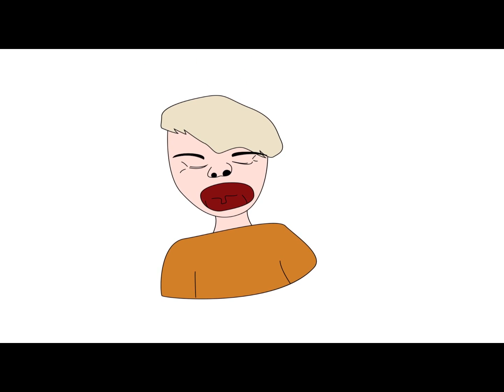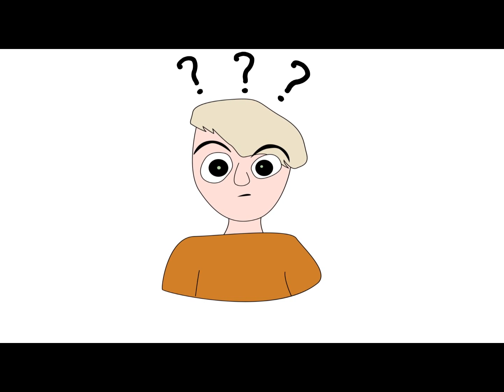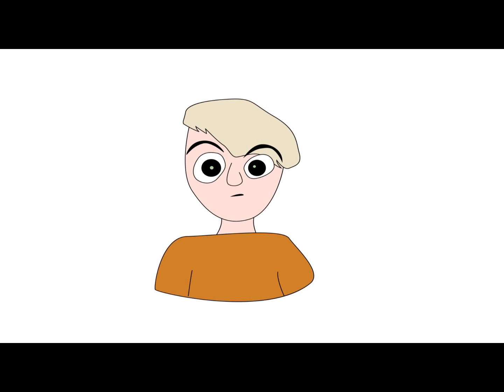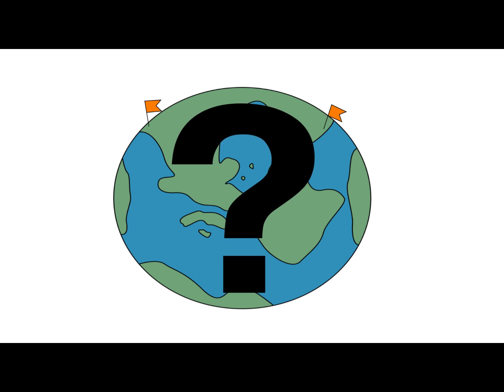Joe asks himself: surely somebody out there in the world will already have drawn this part. How can I find him, and how could I get the part?